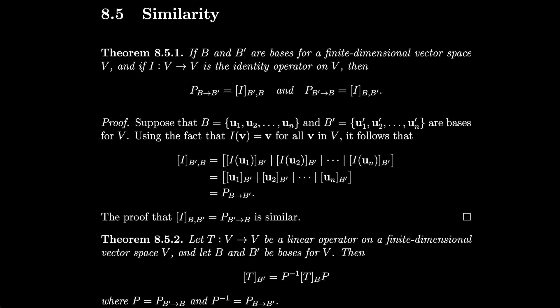Section 8.5, Similarity. If B and B prime are bases for a finite dimensional vector space V, and if I from V to V is the identity operator in V, then P from B to B prime, the transition matrix from B to B prime, is equal to I_{B'B}, and P_{B'B} is equal to I_{BB'}.